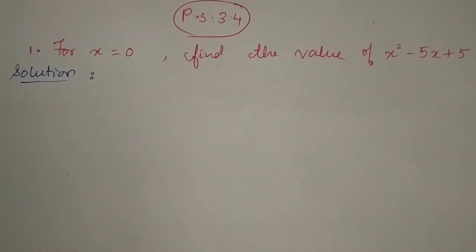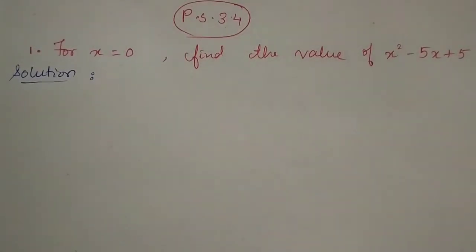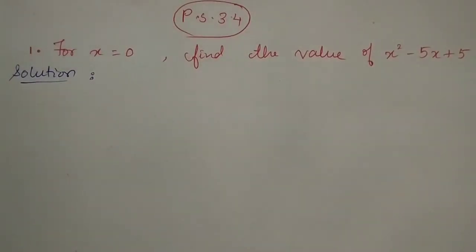If you want to find the value of this polynomial, you just have to put x equal to 0 — wherever x appears in the polynomial, you replace it with 0, and whatever answer you get is the answer. You just have to substitute the value of x. Since the question gives x equal to 0, you put 0 in place of x.